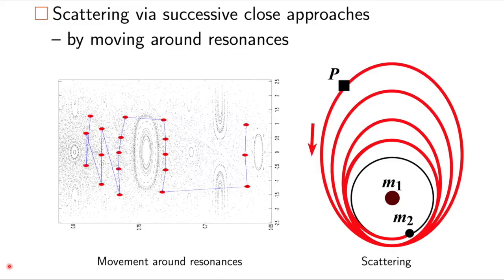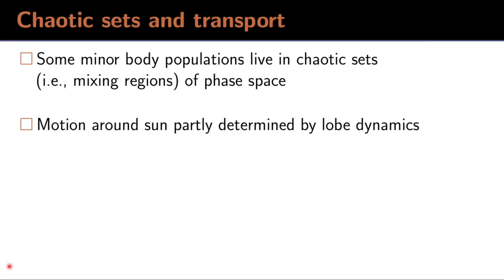Typically, a test particle will encounter multiple resonances, and we would have motion that, at least on a Poincaré section, would look like something on the left. And a schematic is shown on the right as the test particle basically moves around regions of stable mean motion resonances. So it seems that some minor body populations live in chaotic sets, that is, mixing regions of the phase space. And the motion is determined partly by this lobe dynamics.